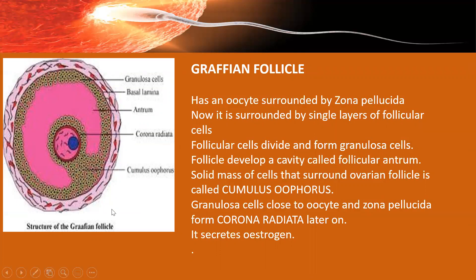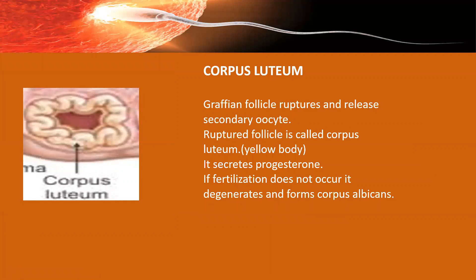The Graafian follicle also behaves as an endocrine structure, secreting the hormone estrogen. Estrogen is responsible for secondary sex characteristics in females, a very important one being the beginning of the menstrual cycle. When the Graafian follicle bursts and releases the ovum, the remaining structure — the corpus luteum — also behaves as an endocrine structure and secretes progesterone. Progesterone is responsible for maintenance of pregnancy and the thickening of the endometrium of the uterus.